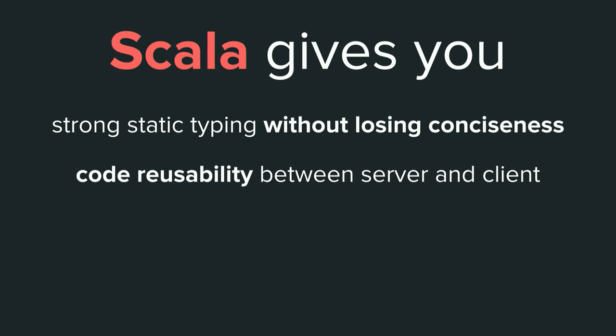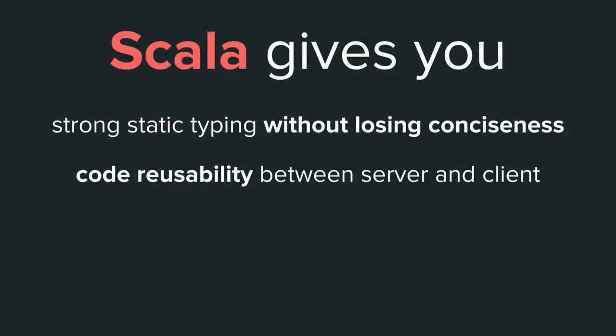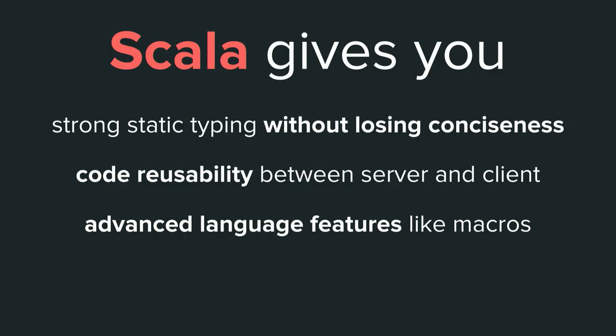You also get code reusability between your server and the client. If you're already writing your back-end in Scala, you can share the exact same source code on the front-end. Libraries like Cats and upickle — for converting Scala values to JSON — cross-compile to both JVM and JavaScript. You can even reuse complex algorithms between server batch jobs and client-side execution. Scala.js ensures consistency so the same code behaves identically on JavaScript and JVM.